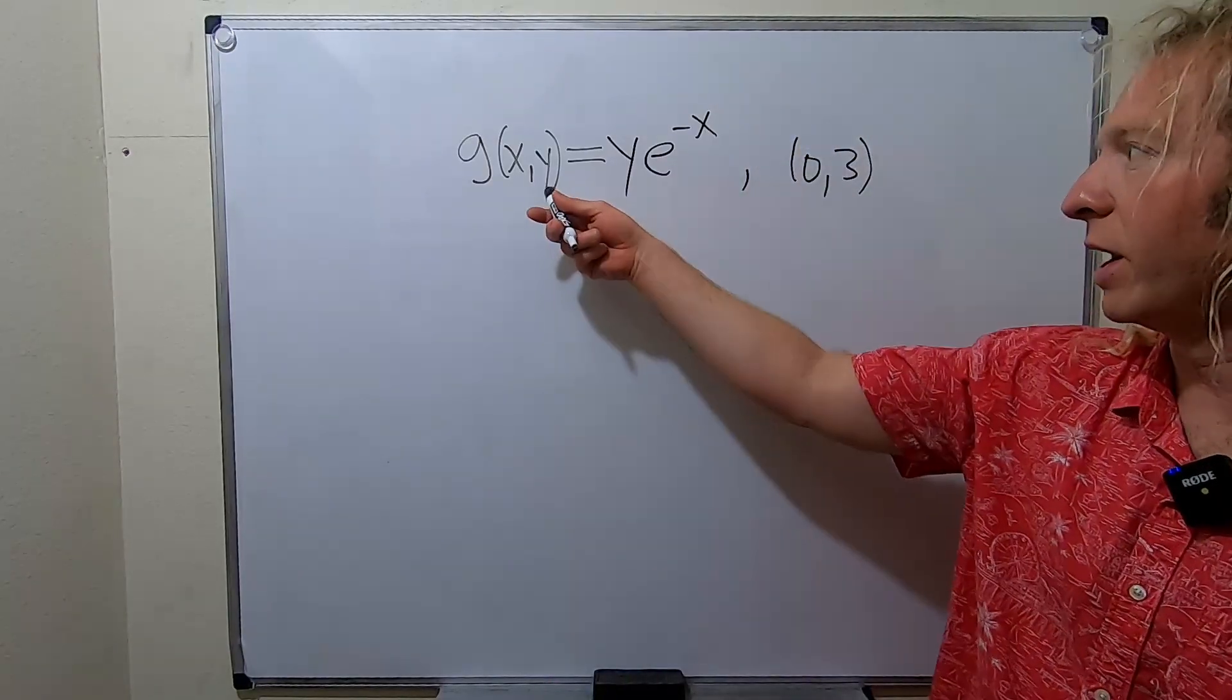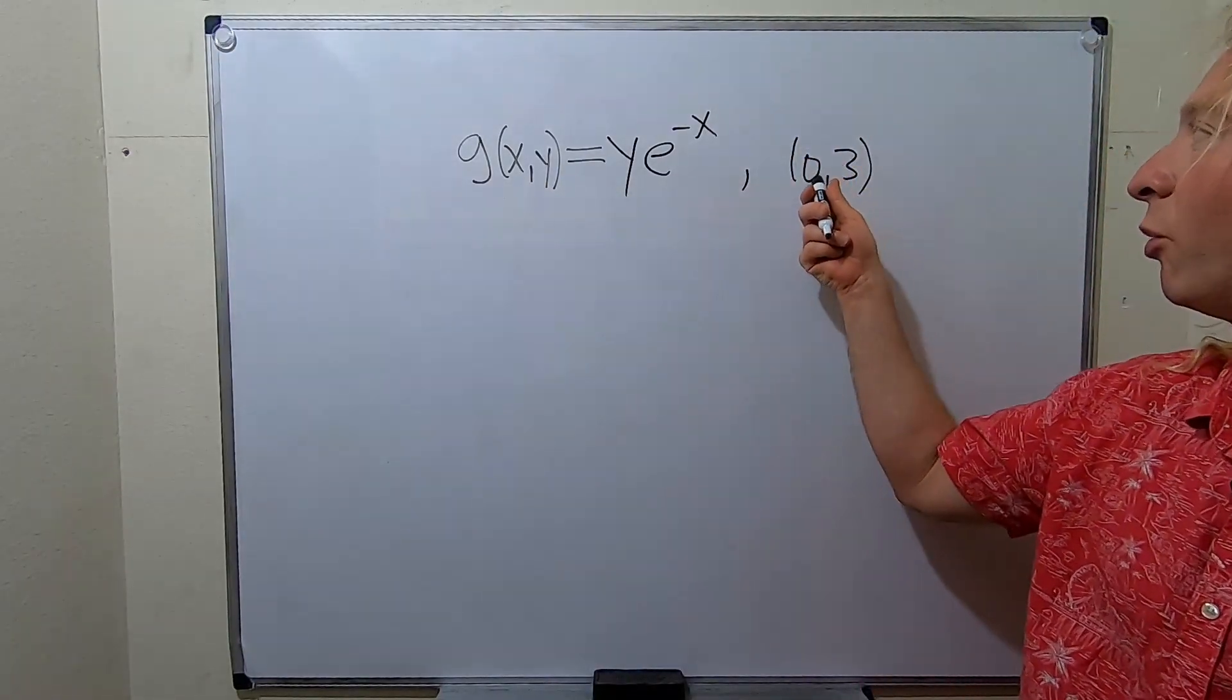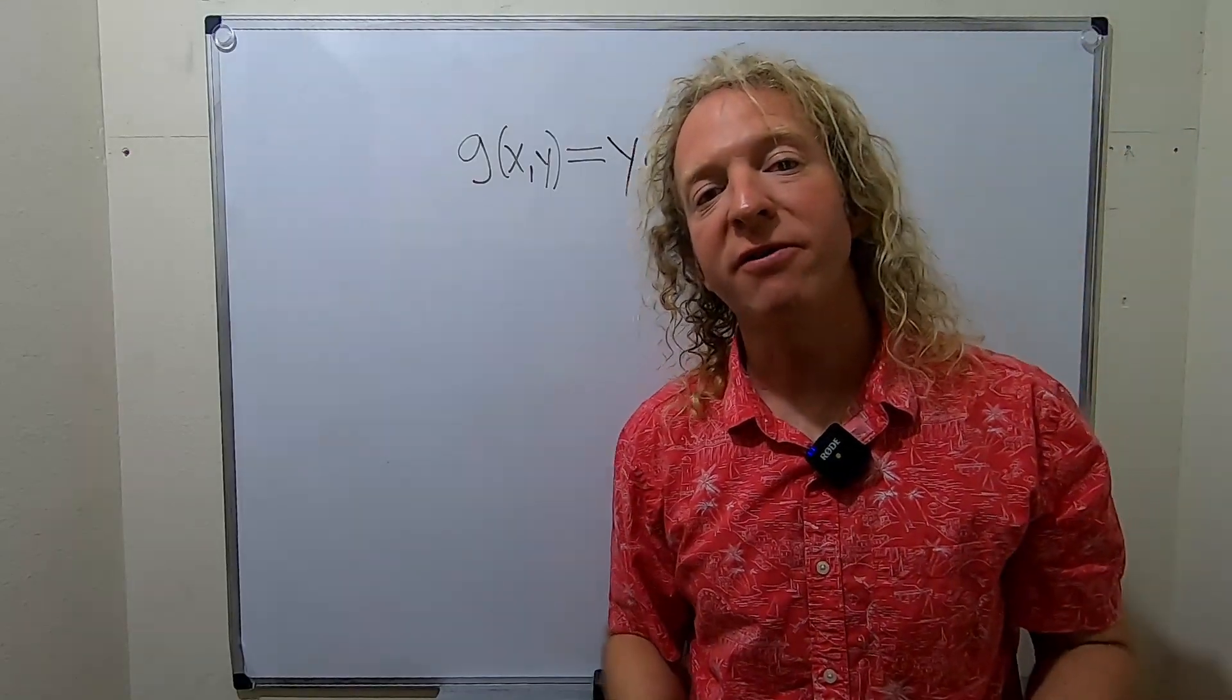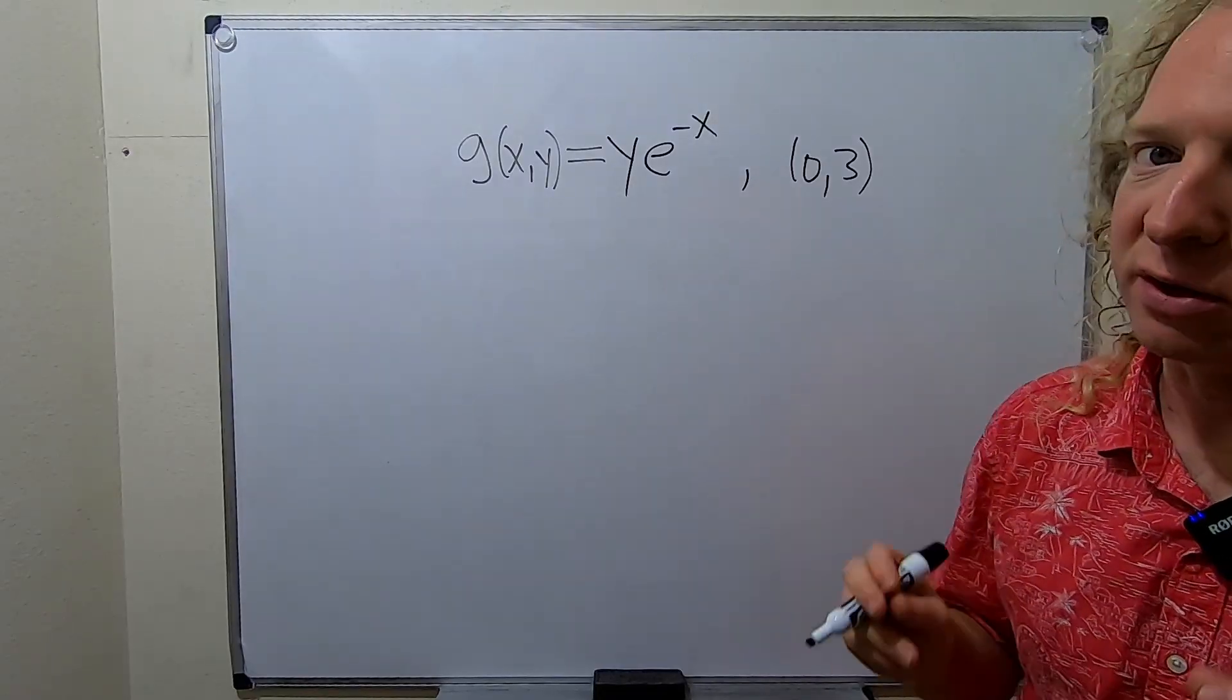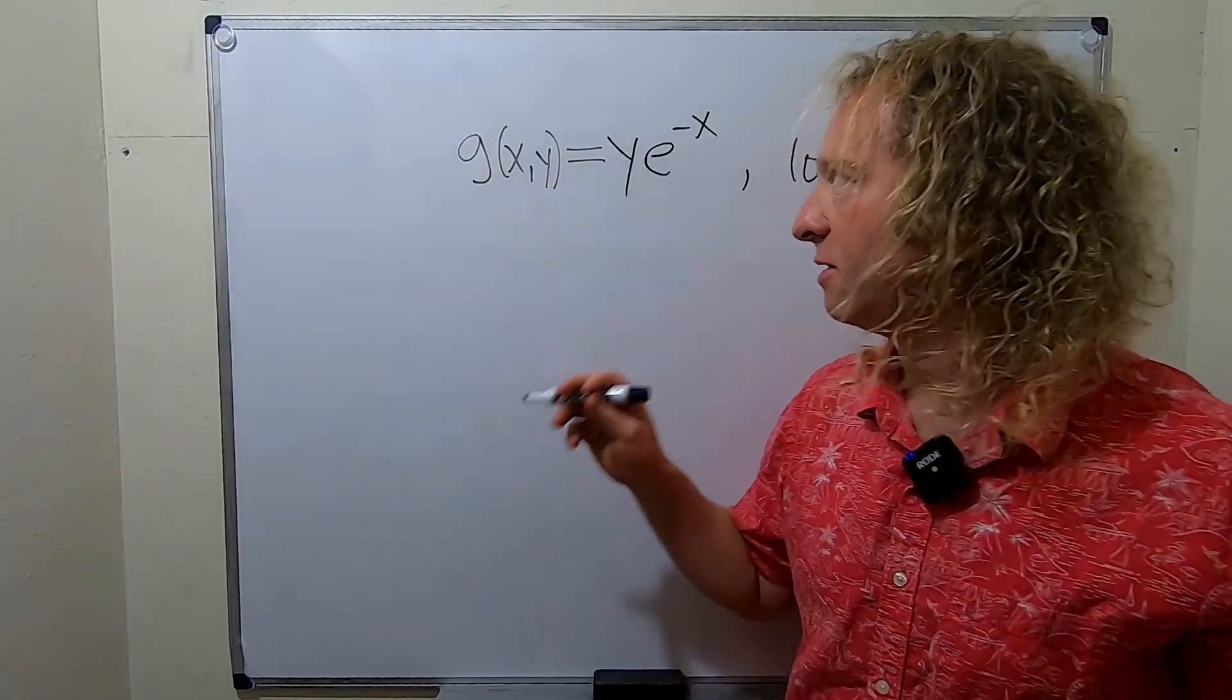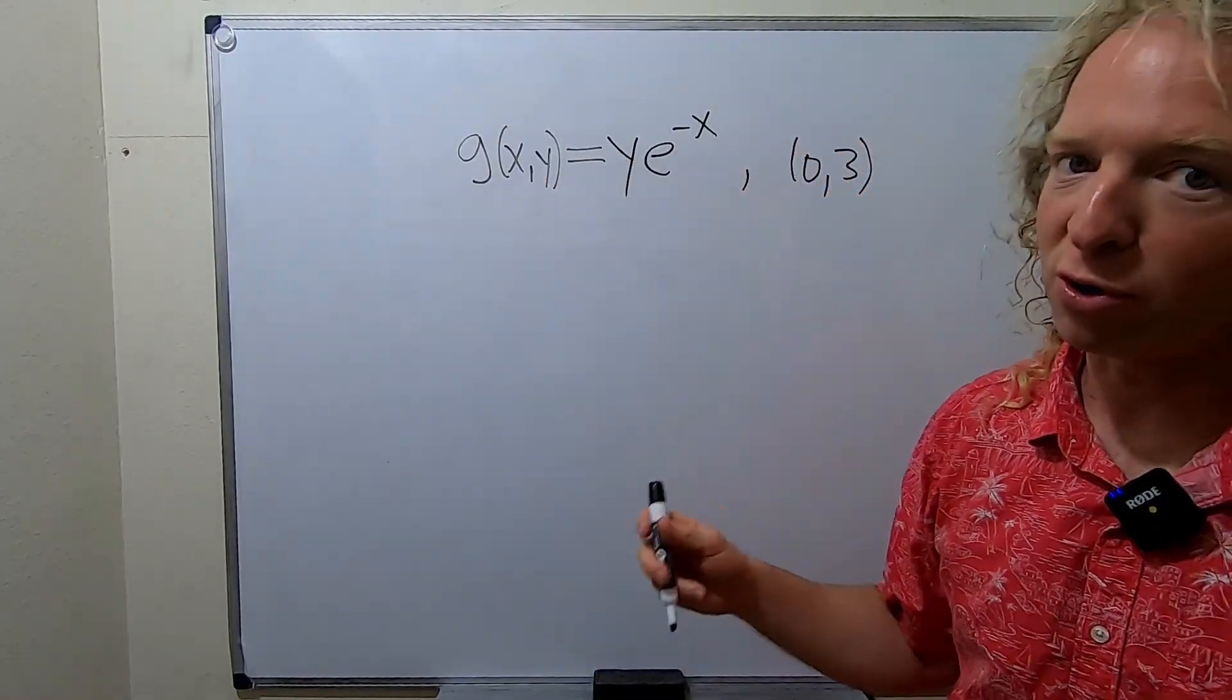In this video we're going to find the gradient of this function at the point and we're going to find the maximum value of the directional derivative. So let's start by finding the gradient. The gradient is the vector of the first-order partial derivatives.